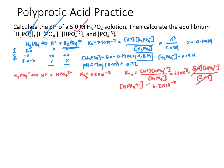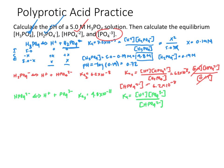Now that we've calculated [HPO₄²⁻], we move to the third ionization to find [PO₄³⁻]. We write out the ionization product and the Ka, set up the equilibrium expression, and again use the H⁺ value from the first step and the [HPO₄²⁻] from the second step. Plugging those values and the Ka into the expression and solving for PO₄³⁻ gives us 1.6 × 10⁻¹⁹ M.